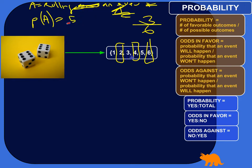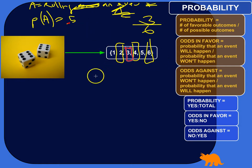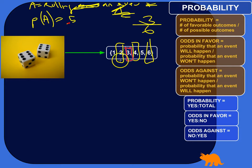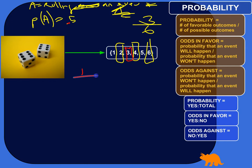Let's look at rolling the number three. First, what's the probability that we'll roll a three? The number of favorable outcomes would be one — there's only one three. Total outcomes are six — there are six different numbers you could roll.